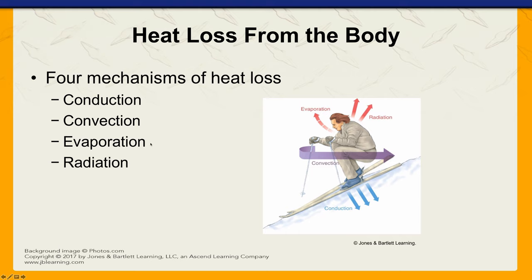The third mechanism is evaporation. A good example is a dog panting on a hot day — moisture on the tongue turns into water vapor and evaporates, removing heat energy from the tongue in that process. The fourth is radiation — heat transfer that doesn't rely on contact between the heat source and object. Heat can be transmitted through empty space by thermal radiation, also called infrared radiation.